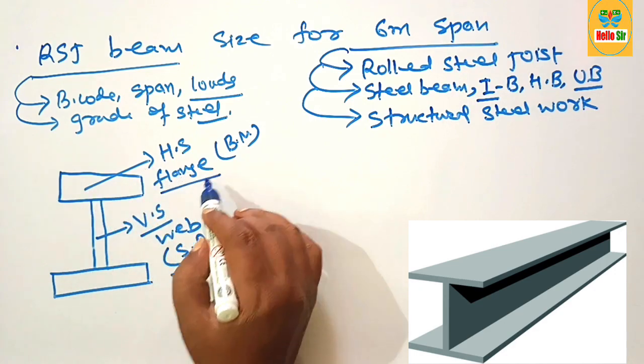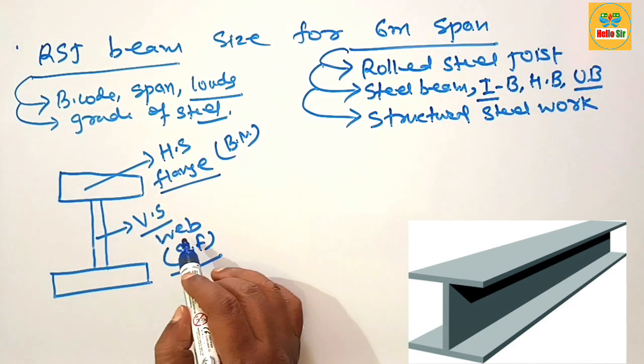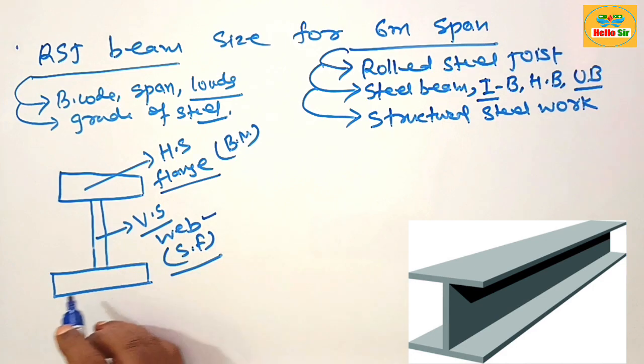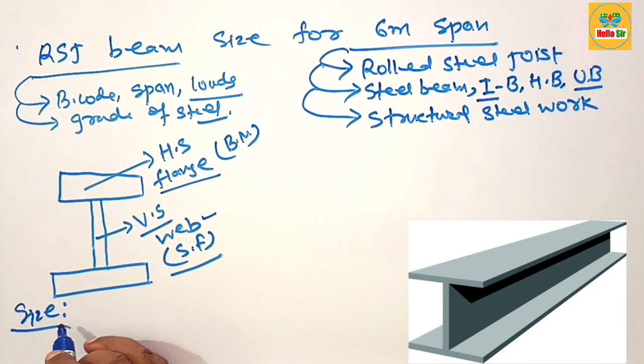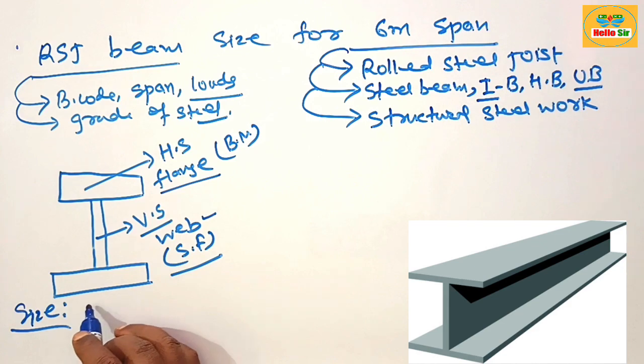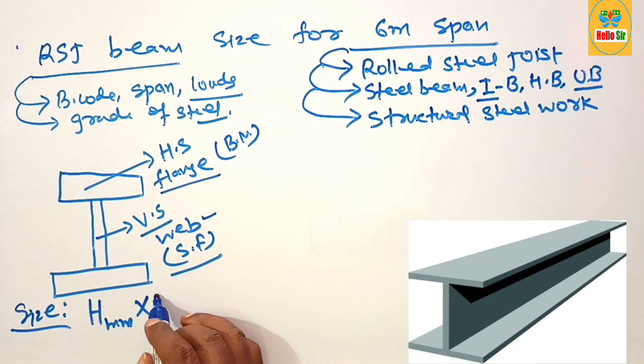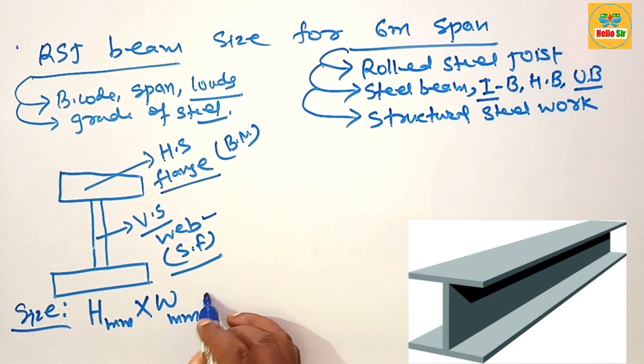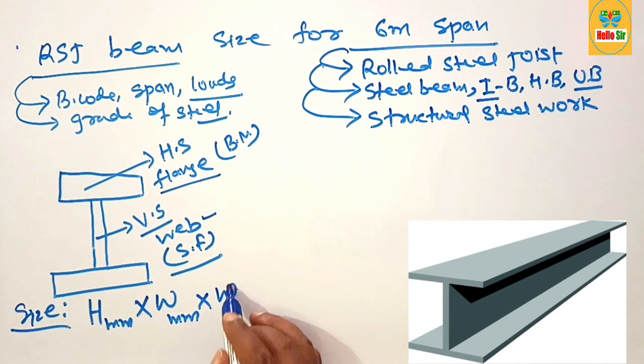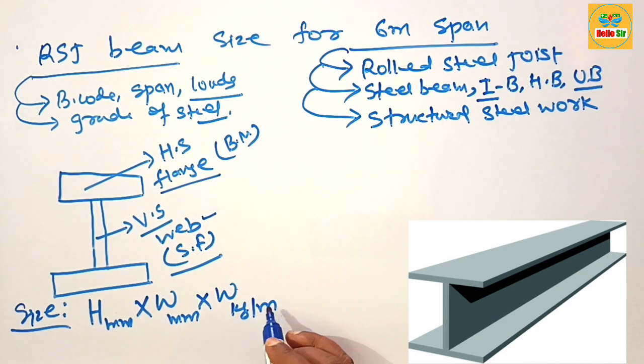The horizontal section is known as flange and vertical height is known as web. The size of RSJ beam is expressed first in vertical height in mm, then width of the flange in mm, and what is the weight of RSJ beam in kg per meter.